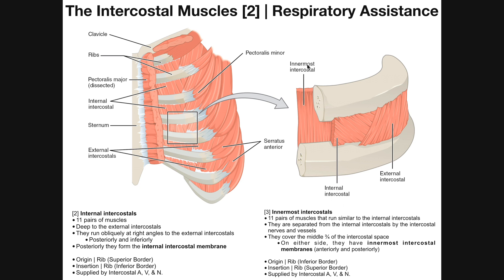The innermost intercostals are more or less synergistic with the internal intercostals, and so they aid in exhalation — specifically forced or active exhalation. Similarly to the external and internal intercostals, the innermost intercostals are supplied by the intercostal artery, vein, and nerve at that particular intercostal space level.